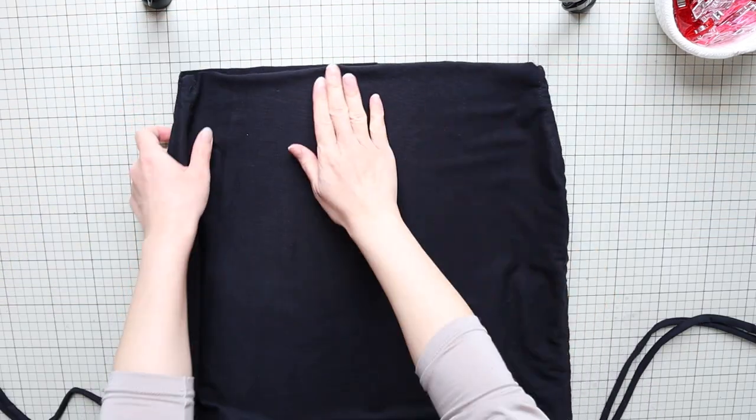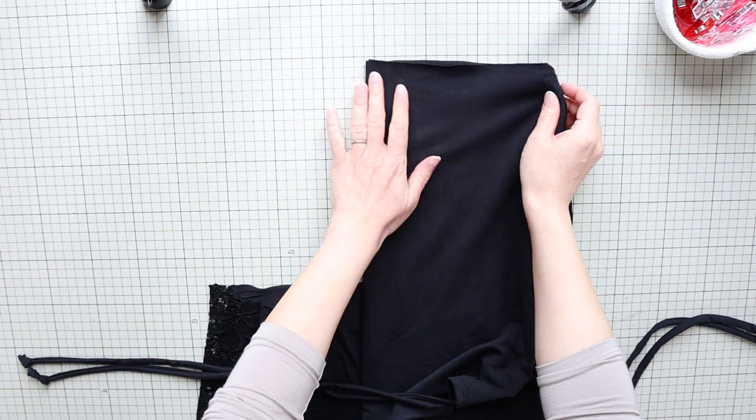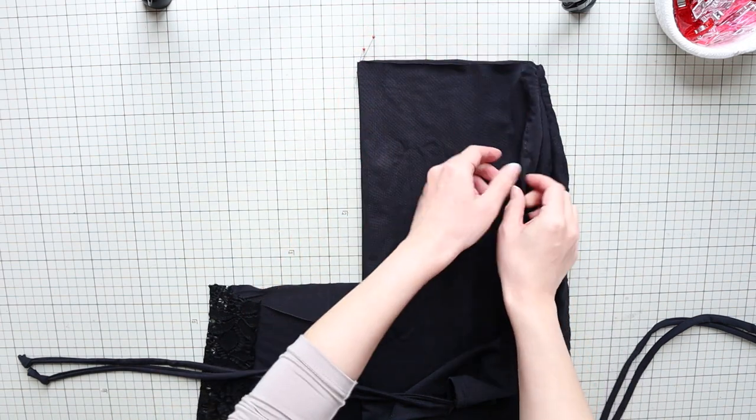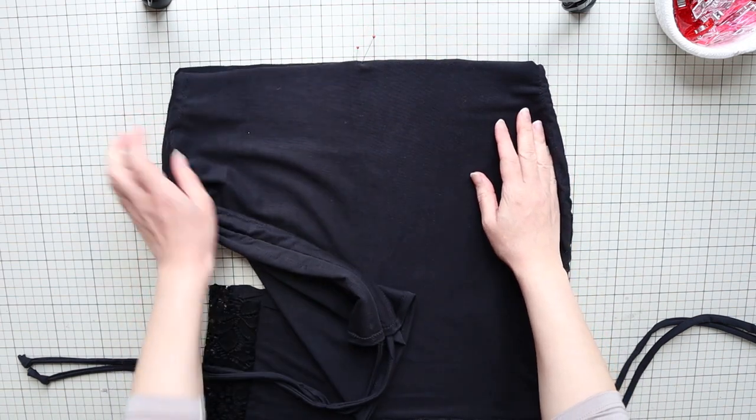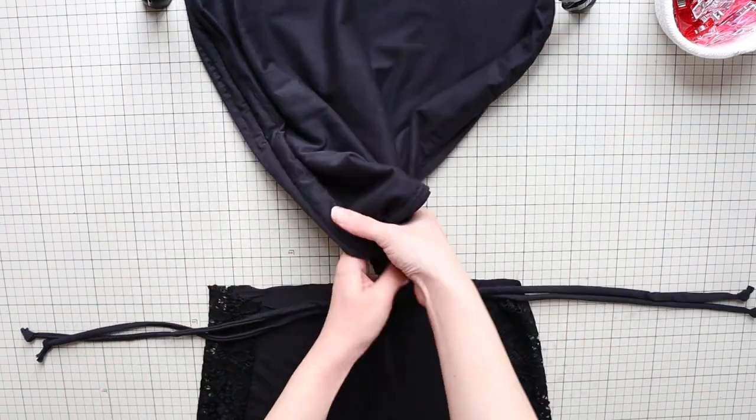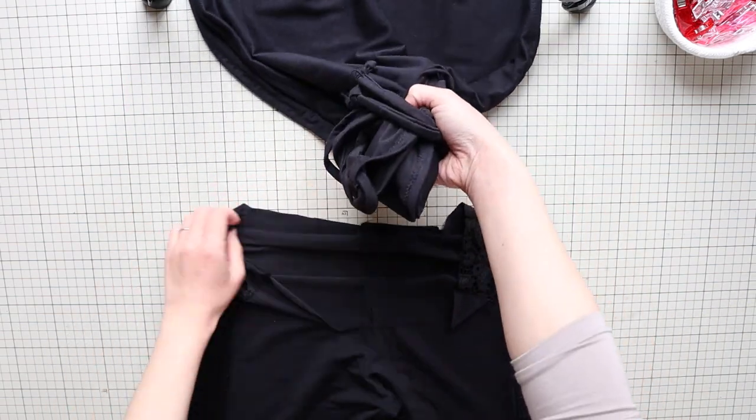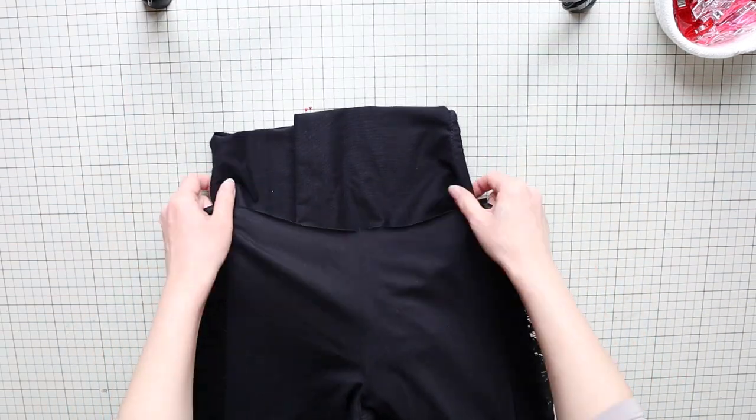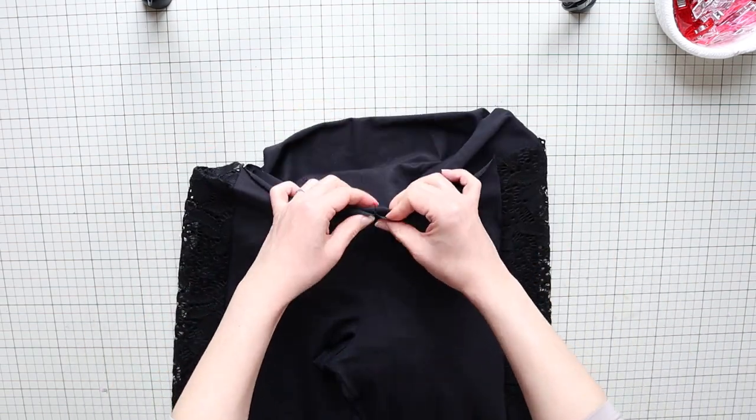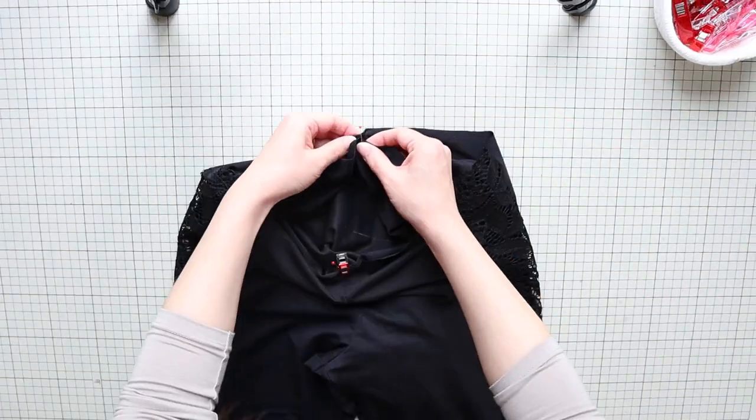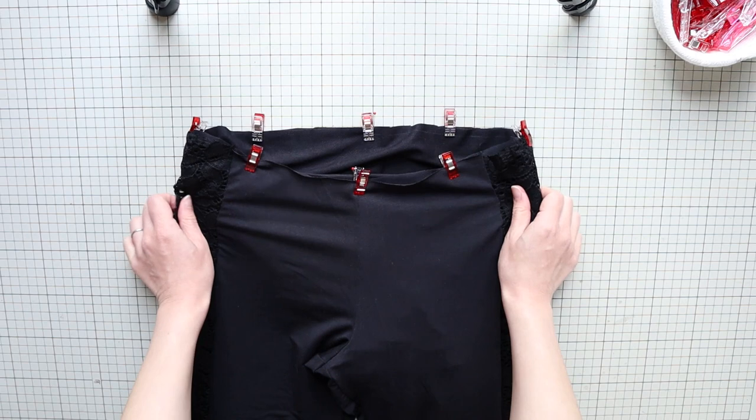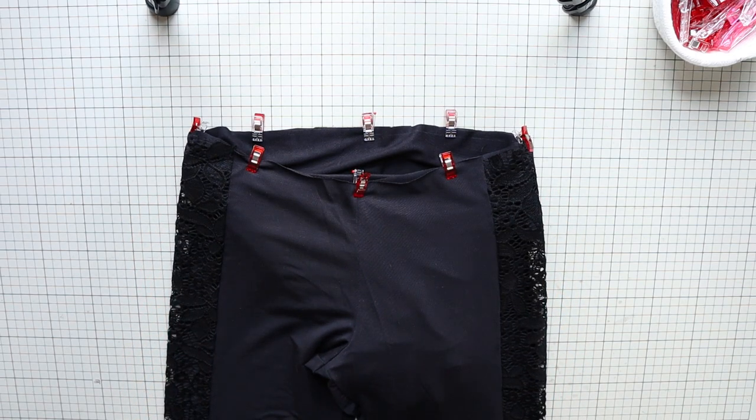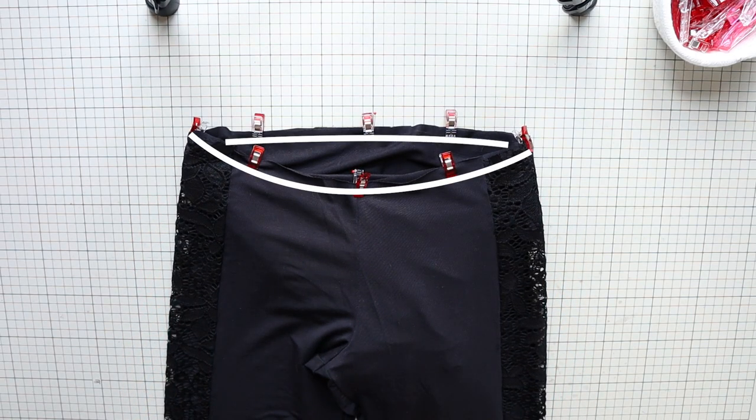On your skirt at the top edge, find the center points in the front and back. Mark them with pins. And place it inside the pants so the right side of the skirt is facing the wrong side of the pants. Match up the center front and back and side seams and the rest. And do a regular zigzag stitch with a 1 centimeter or 3/8 of an inch seam allowance all around the waistband area.